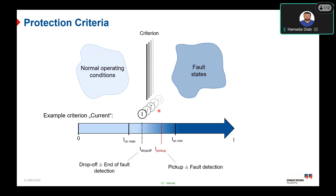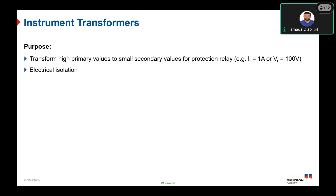Other protection criteria include frequency — for load shedding or over/under frequency protection — as well as phase angle difference, rate of change of frequency, rate of change of voltage or power. Based on the protection function used, you can identify which protection criteria is suitable for your system.